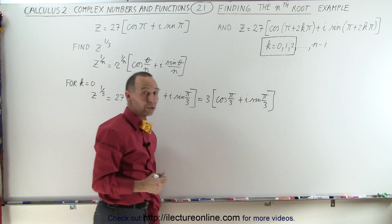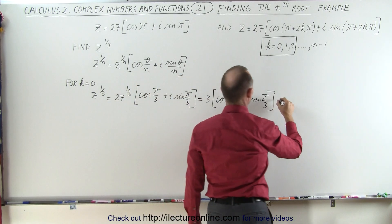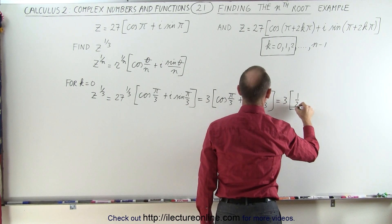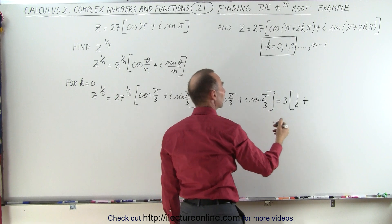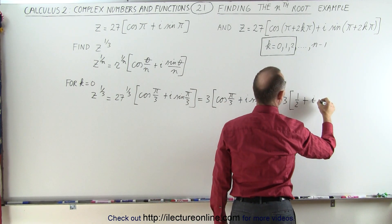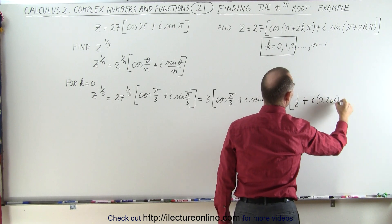And if you'd like to work out what that is equal to, the cosine of 60 is 1/2, so this can be written as 3 times 1/2 plus, and the sine of π over 3 is 0.866, that would be plus i times 0.866.